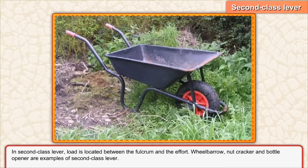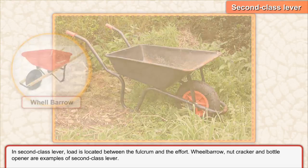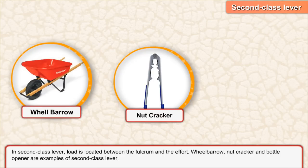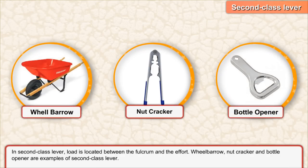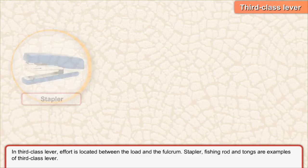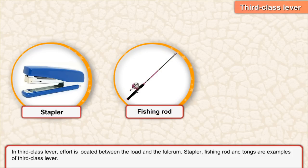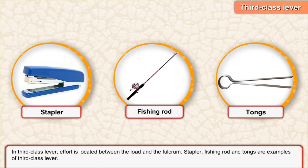Second class lever. In a second class lever, the load is located between the fulcrum and the effort. Wheelbarrow, nutcracker, and bottle opener are examples of second class lever. Third class lever. In a third class lever, the effort is located between the load and the fulcrum. Stapler, fishing rod, and tongs are examples of third class lever.